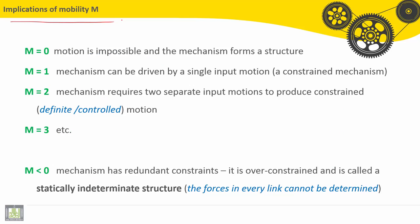Implications of mobility M. If M equals zero, the motion is impossible and the mechanism forms a structure. If it is equal to one, mechanism can be driven by a single input motion. It is called a constrained mechanism.